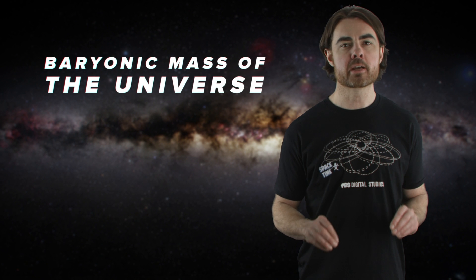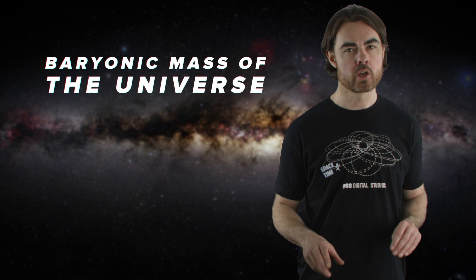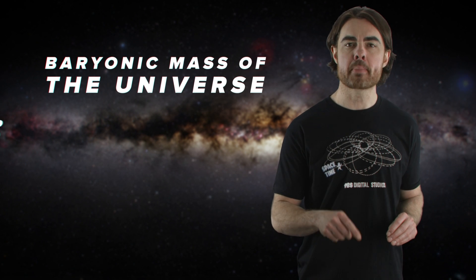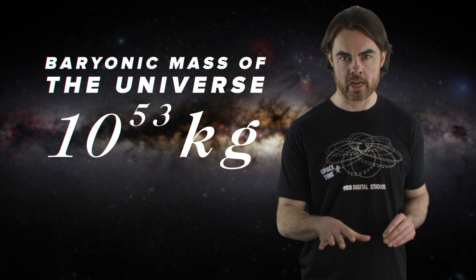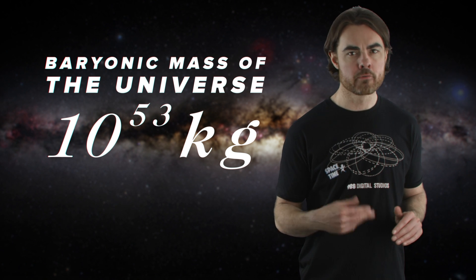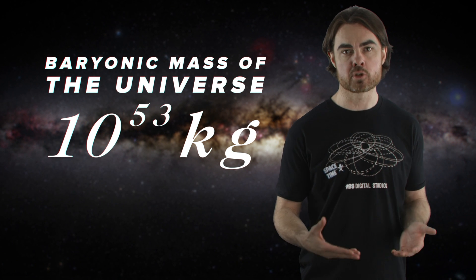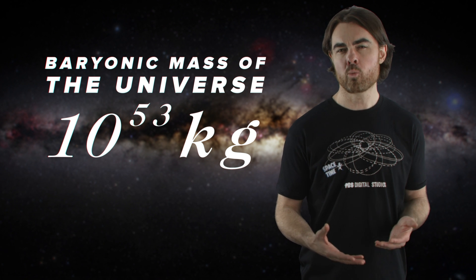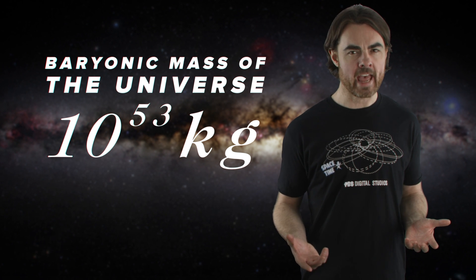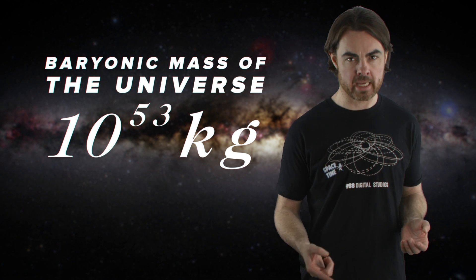There's a couple of ways to go about this, but let's use a number that's easy to find online. The baryonic mass of the universe, which is estimated at 10 to the power of 53 kilograms. That's the mass of all the protons and neutrons in the observable universe. But what about the electrons?